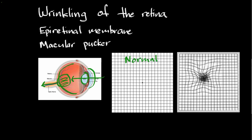And here we have a patient who has wrinkling of the retina. And you can see that these lines are no longer straight up and down, but rather they're wavy. So you might imagine that the scar tissue over the surface of the macula causes wrinkling of the retina, which causes wrinkling in the vision.